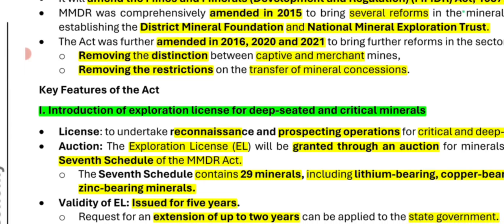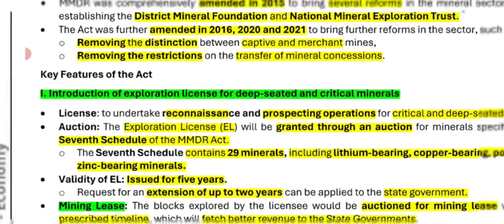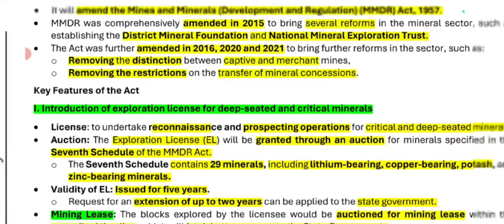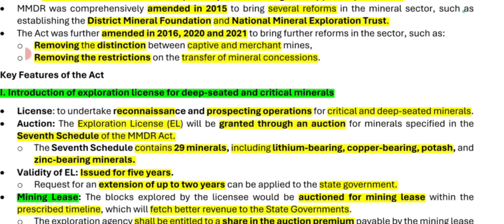Deep-seated minerals are found below the earth in core areas. Critical minerals are also required. The exploration license allows reconnaissance and prospecting operations for critical and deep-seated minerals. You can find, explore, operate, and study mineral deposits. The exploration license will be granted through auction — whoever offers more money for the exploration license will be granted it. Exploration licenses will be granted for 29 minerals listed in the 7th schedule, including lithium-bearing, copper-bearing, potassium, and zinc-bearing minerals.